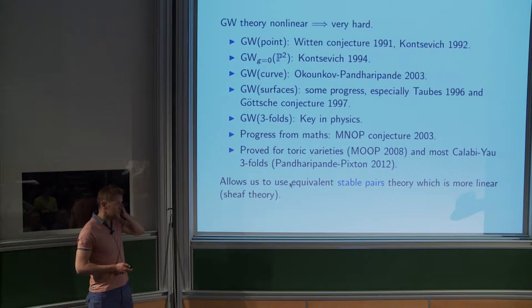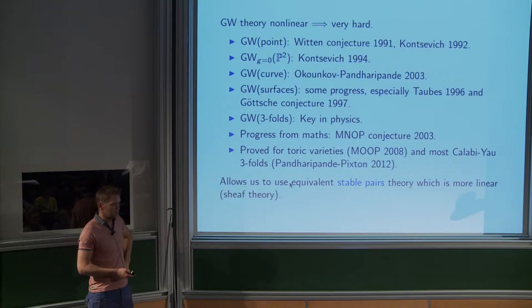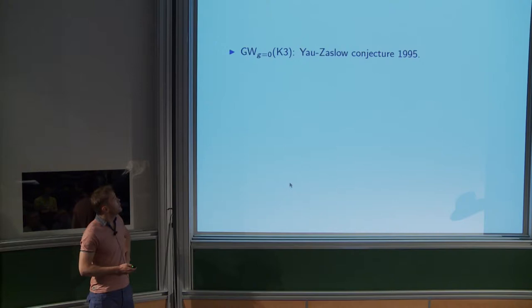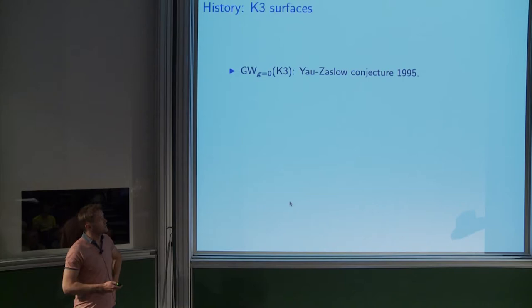There's the wonderful MNOP conjecture, proved for both toric varieties and most Calabi-Yau threefolds — Calabi-Yau threefolds that can be degenerated to unions of toric varieties — by Pandharipande, Pandharipande, and Pixton. This talk is an exercise in using that progress to compute the Gromov-Witten theory of K3-fibered threefolds. It's still very difficult; you still have to compute the stable pair theory and all these multiple covers.